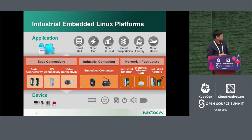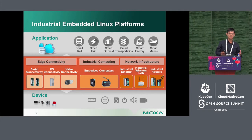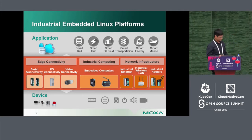Industrial platforms such as edge computing, industrial computing, and networking are used according to industrial applications such as rail, smart grid, and energy. This type of product covers a quite wide range — we can have a microcontroller or a server-level product, so we have lots of choices.